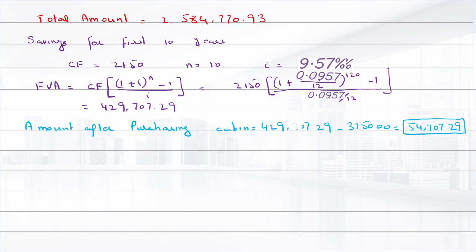He still has 20 years until retirement. When he retires in 20 years this amount will grow at 9.57% per year for 20 years. So the future value is 54,707.29 times (1 + 0.0957/12)^240, which equals $368,043.30.